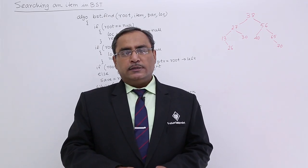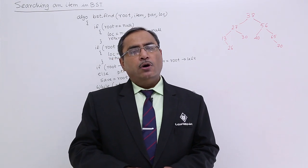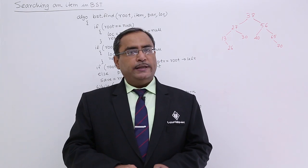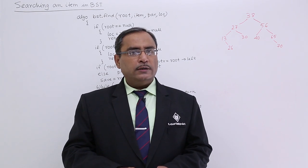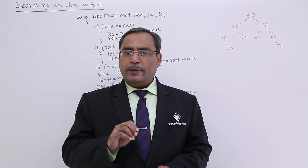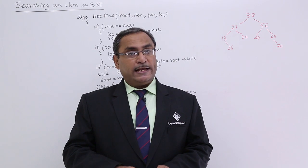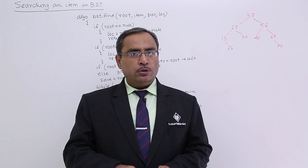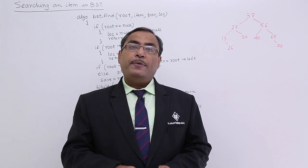In this session, we are discussing searching on a binary search tree. We know that in a binary search tree, all data items are distinct — no repetitions are allowed. In the BST searching algorithm, we pass one search item and the starting address of the binary search tree as input, and we expect two return arguments: the location of the node whose item matches the search item, and its parent address.